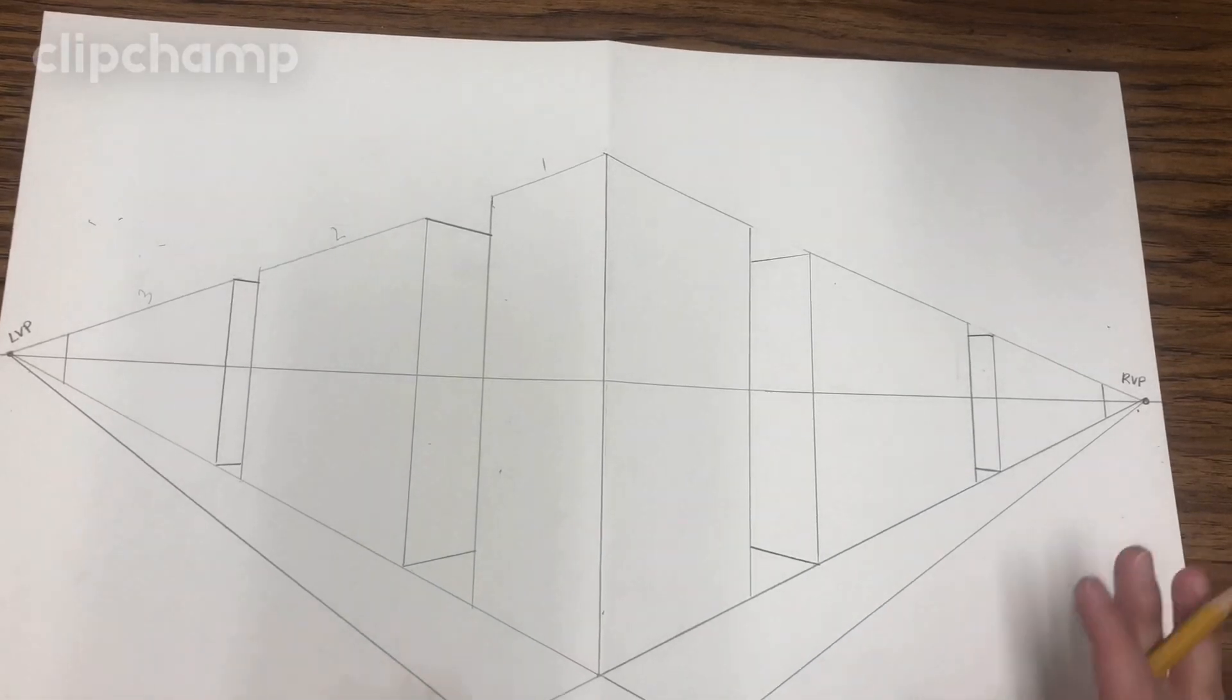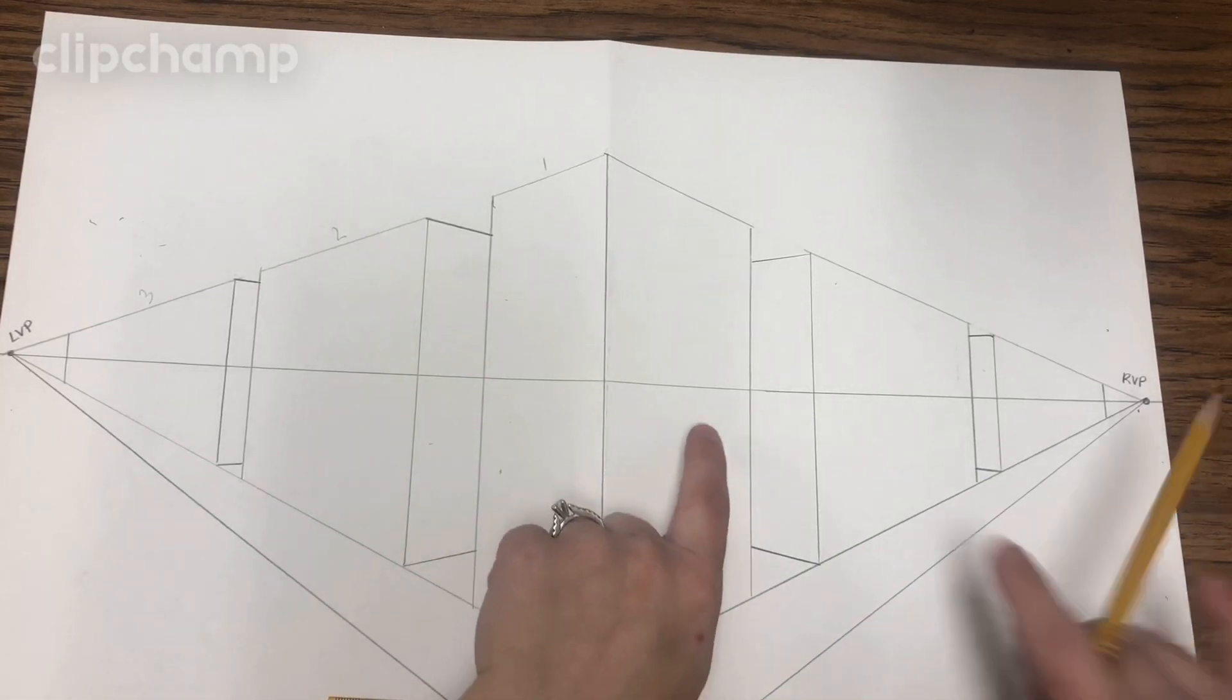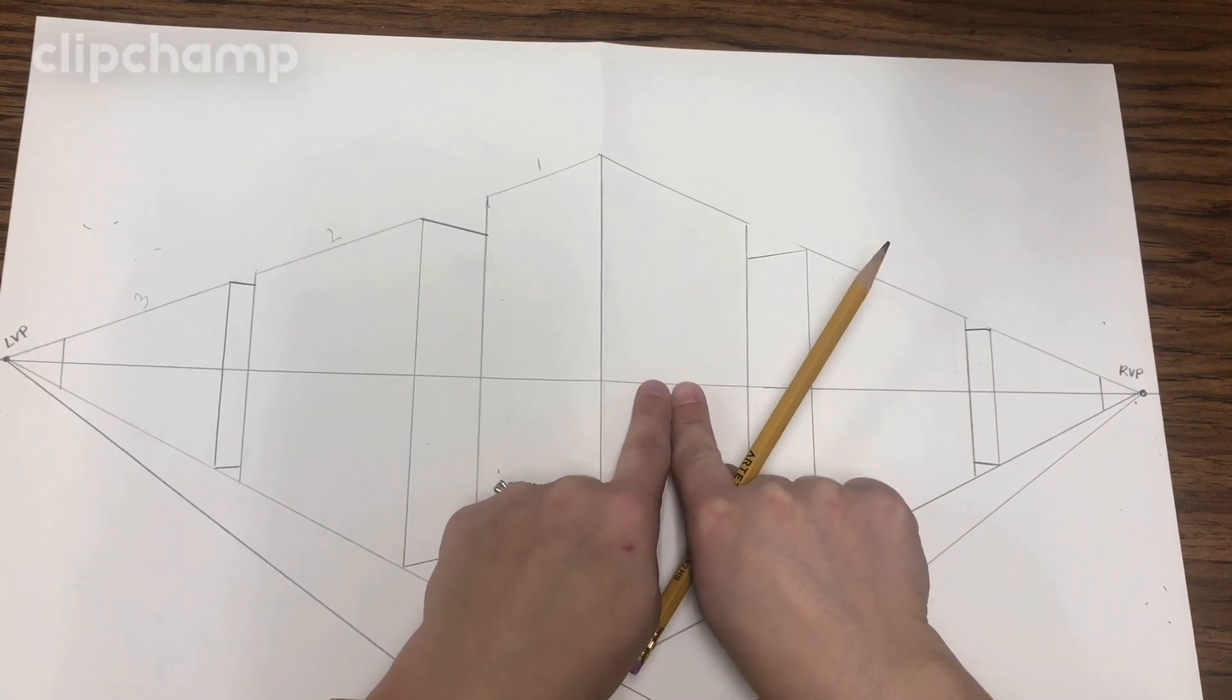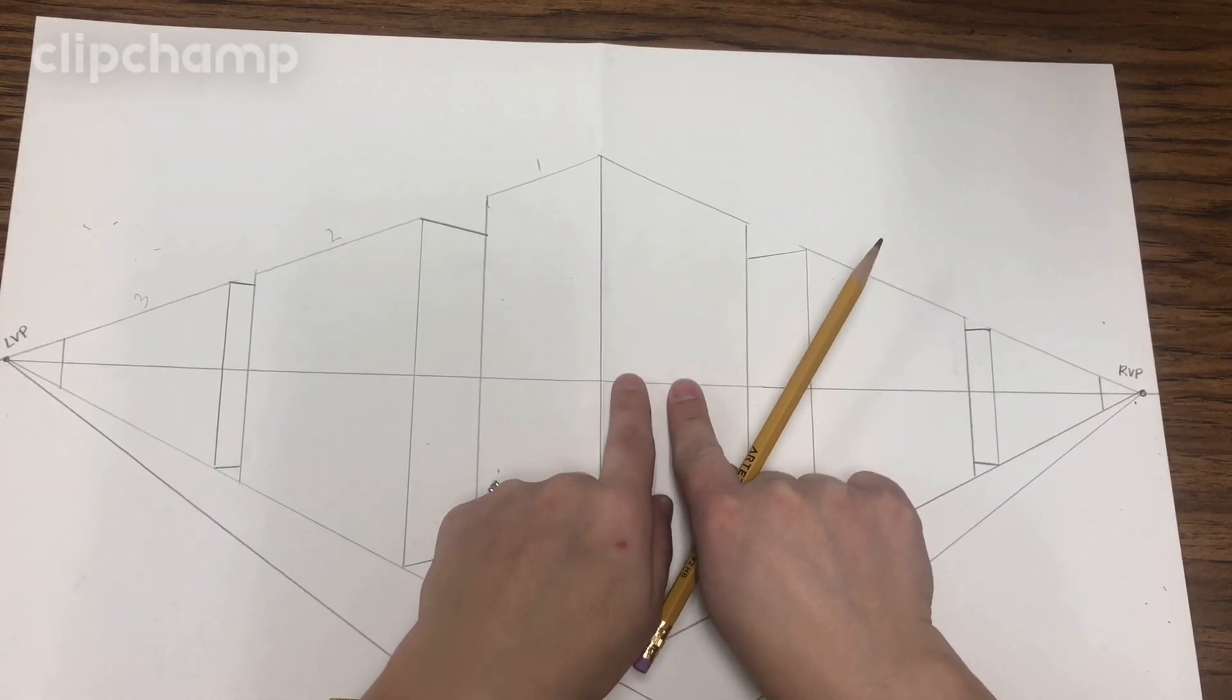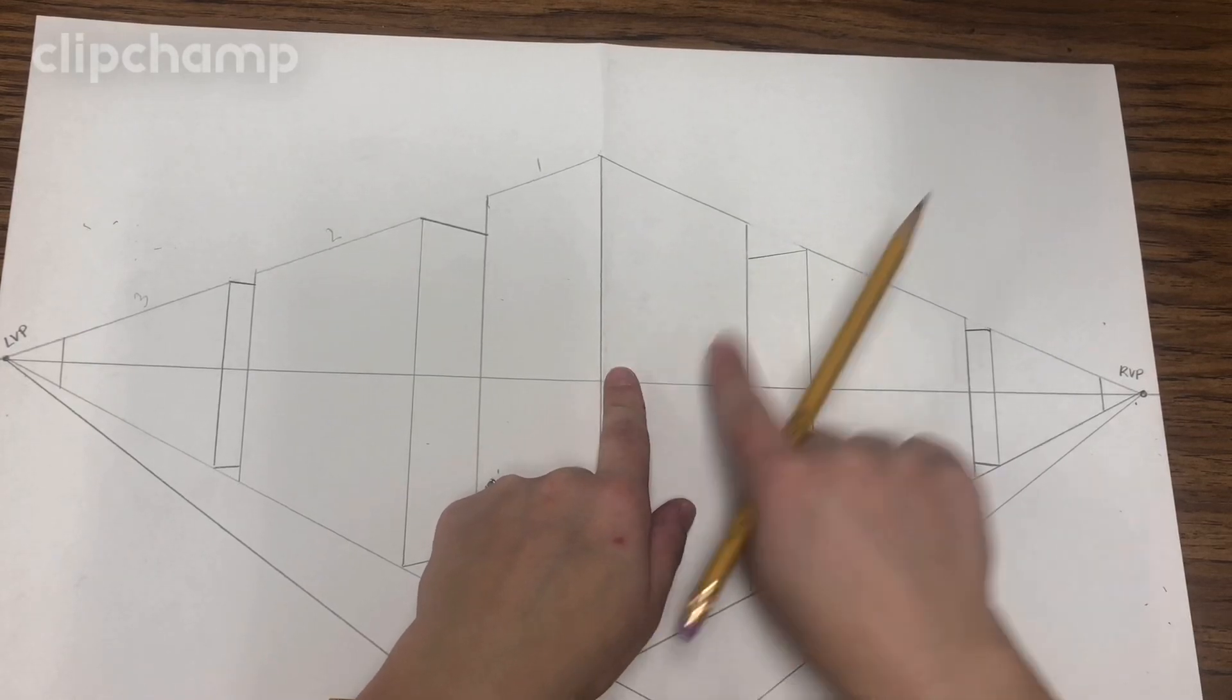All right, so we're ready for part two of our drawing. This is where we're going to start to add doors and windows. We're going to actually use our horizon line to create either our doors or windows. It's up to you. We're going to use it for one of those.